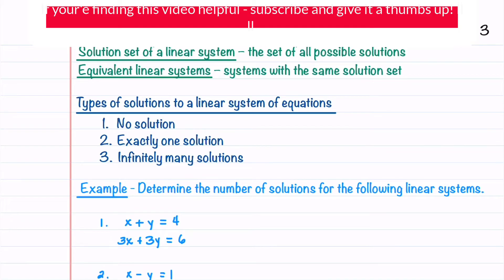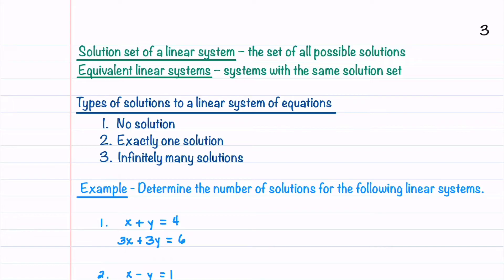Before discussing the number of solutions, let's note two definitions. The solution set of a linear system is the set of all possible solutions. Equivalent linear systems are systems with the same solution set. We'll soon learn that we can solve a linear system by creating an equivalent one that's easier to solve, with the same solution set.